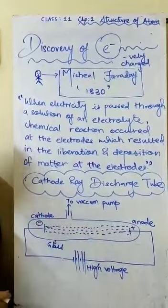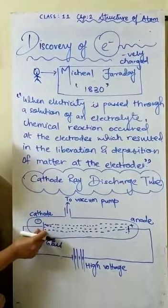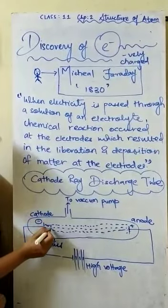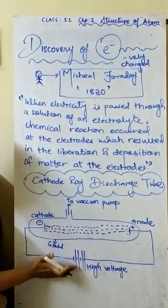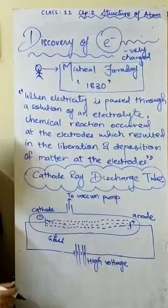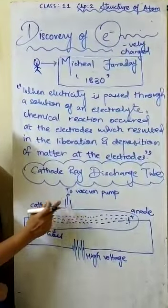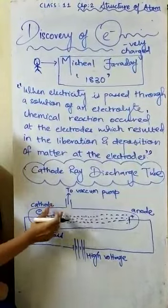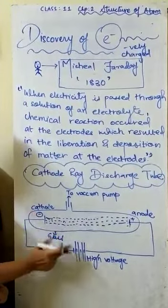Why do we need the vacuum pump? Because to see this stream of particles, we need high voltage applied and also low pressure of the gases inside. Agar gas ka pressure zyada hai toh vacuum pump se usko low kar sakte hain — then and then only we can see this stream of particles.